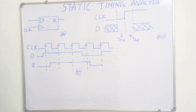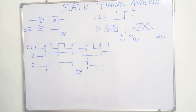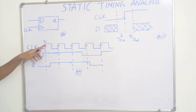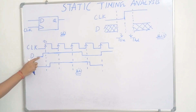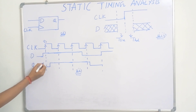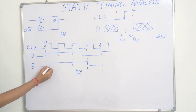In the positive edge triggered D flip-flop, the output will change when the positive edge of the clock has arrived. These are the positive edges of the clock. Let this be time T1. At T1 the first clock edge arrives. The D input before time T1 just changed from 0 to 1. On the arrival of this clock edge, Q is the output, so it will also change from 0 to 1 on this clock edge.